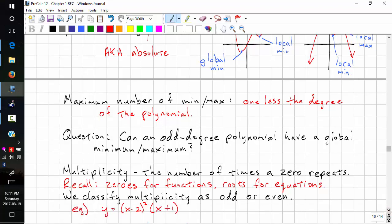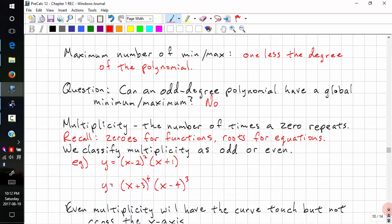Can an odd degree polynomial have a global min or max? And we've discussed this twice, and the answer is no. Because it starts at negative infinity and goes to positive infinity, or it goes from positive infinity to negative infinity.